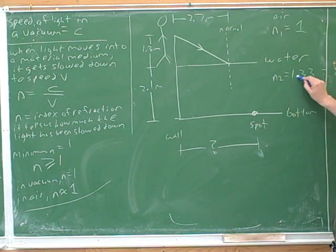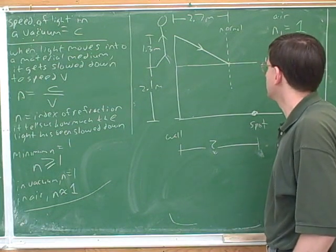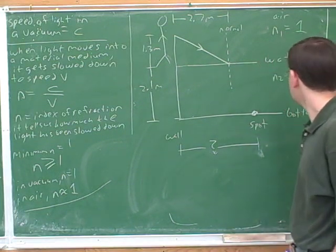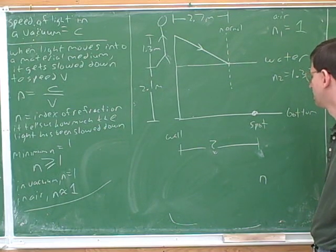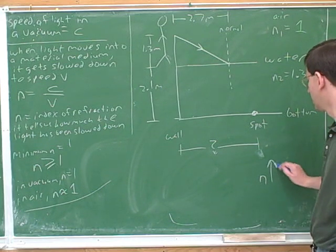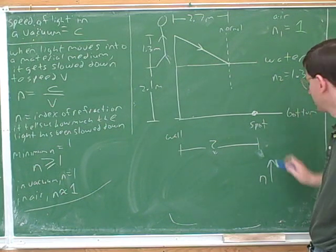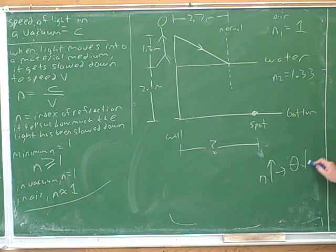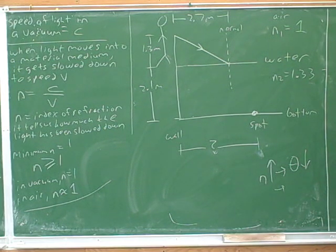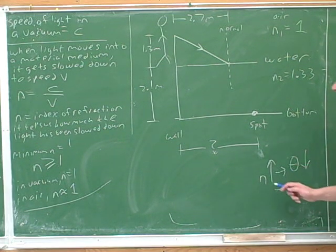We can look that up in the table, but we may already be starting to memorize it. Now we're ready to start using Snell's law. As we move into the second medium, is n getting bigger or smaller? It's getting larger, because 1.33 is bigger. So what's going to happen to the angle in the second medium? It's going to be smaller — there's an inverse relationship between n and theta.